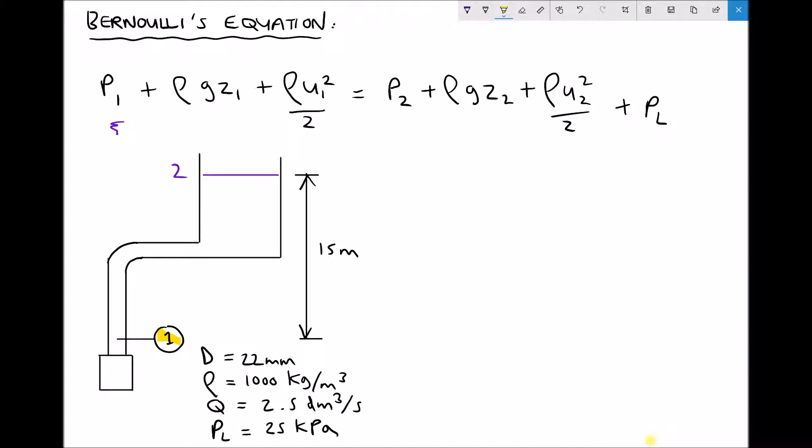Our third term relates to the velocity of the fluid. We have rho u1 squared over 2. Note that in Bernoulli's equation and in fluid dynamics in general we usually use u to represent velocity because v is used to represent volume.